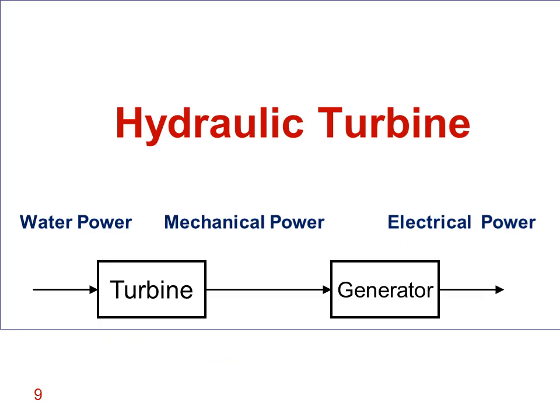A turbine is a machine which converts water energy, or water power, to mechanical power. This mechanical energy is then transferred to a generator, where it is converted to electrical energy.